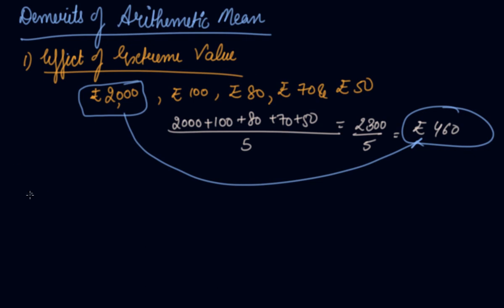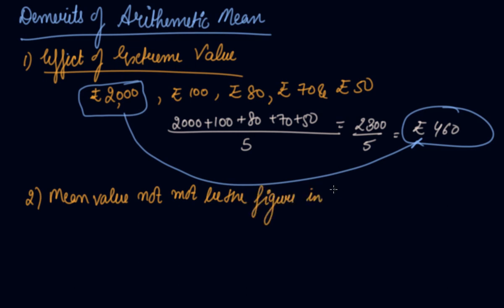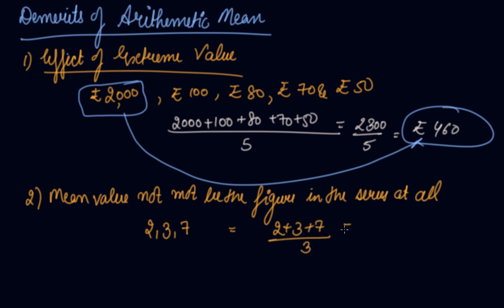The second demerit is that the mean value may not be a figure present in the series. For example, if we have a series 2, 3, 7 and we find the arithmetic mean: 2 plus 3 plus 7 divided by 3 gives us 4. But the answer 4 is not included in the series at all.